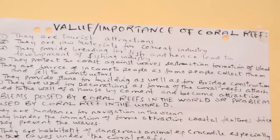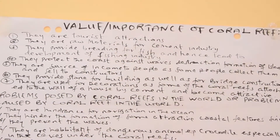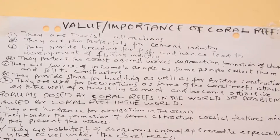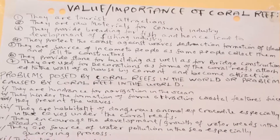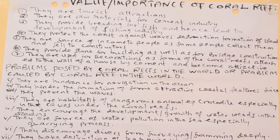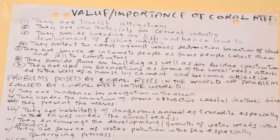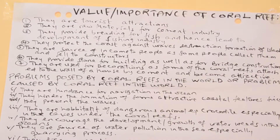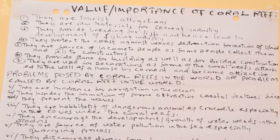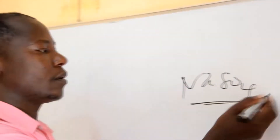Another importance is that coral reefs are raw materials for the cement industry. For instance, Tanga is nearby Mombasa. Therefore, even at Tanga there is an industry which produces cement. These coral reef materials are very valuable as raw materials for making cement. Wherever this material is added with certain chemicals, we obtain cement which is used for building.